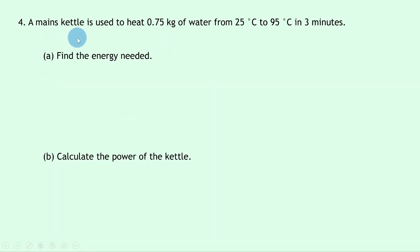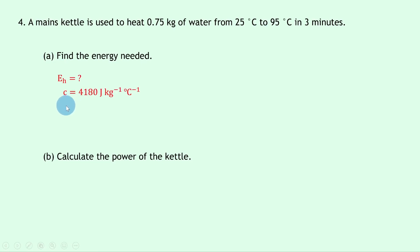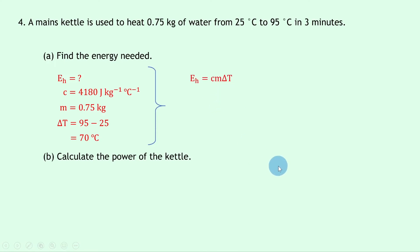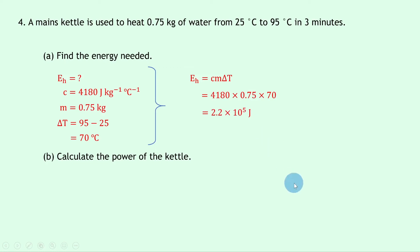Question four says a mains kettle is used to heat 0.75 kilograms of water from 25°C to 95°C in three minutes. Part a says find the energy needed. We have c = 4,180 J/kg/°C, m = 0.75 kg, and delta T = 95 − 25 = 70°C. Using E_H = cm·delta T gives 4180 × 0.75 × 70, which equals 2.2 × 10⁵ joules.